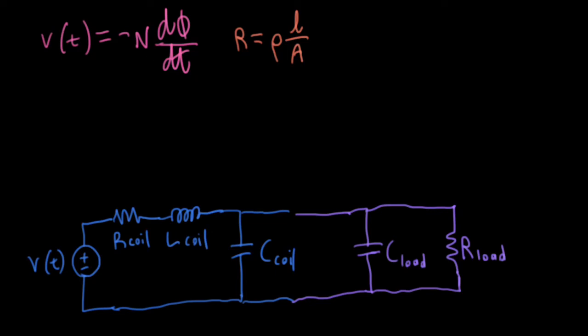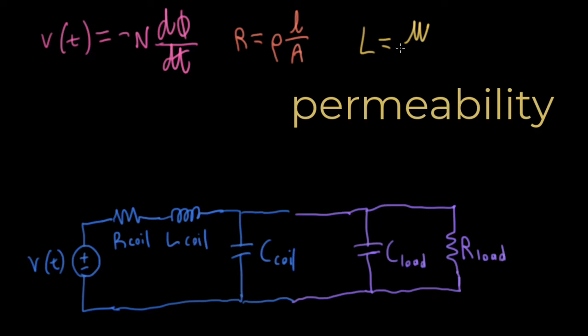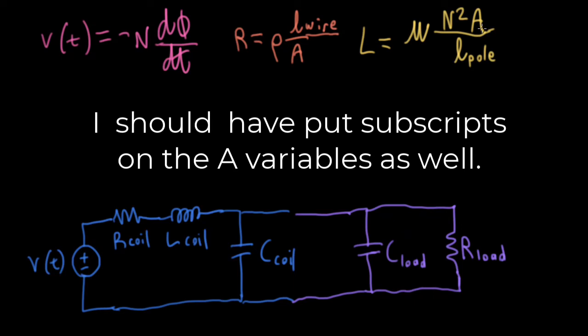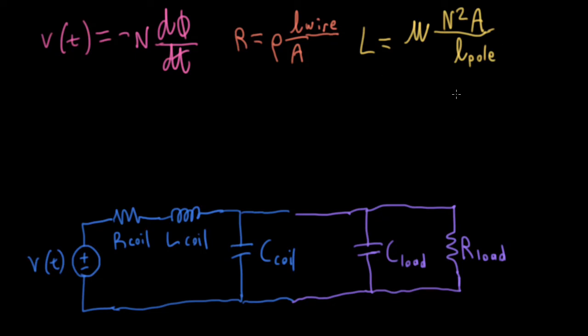Now the inductance, that's very interesting. That's usually given by a formula like this. You have the permeability mu that has to do with your magnetic core times N squared A over L. Now this L is actually different than this L, so let me actually put a little subscript. I'm going to indicate that this is the length of the wire, and this is the length of the pole piece. So A is the cross-sectional area of the pole piece.